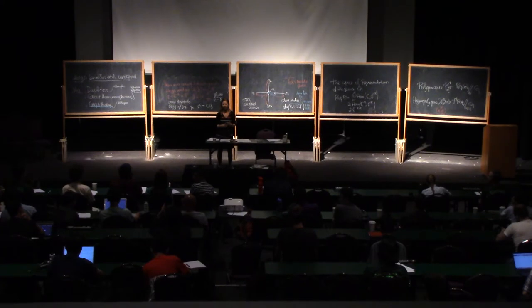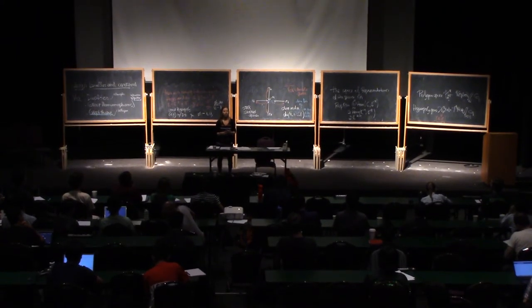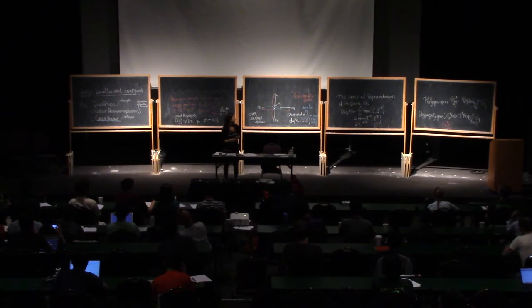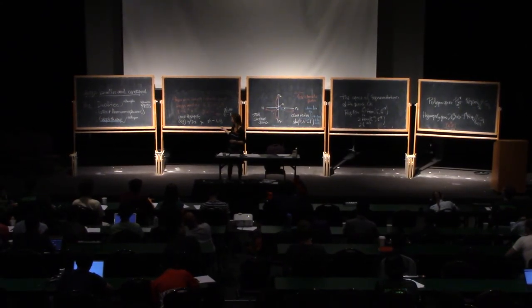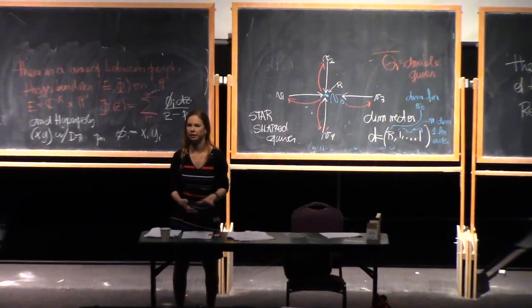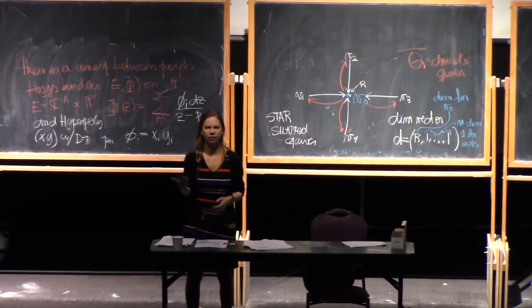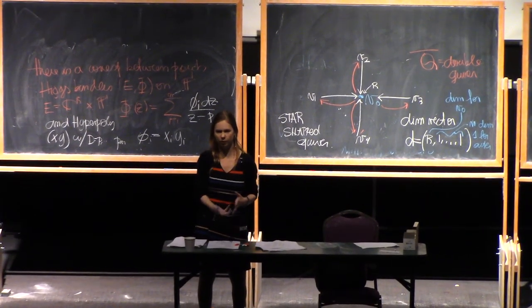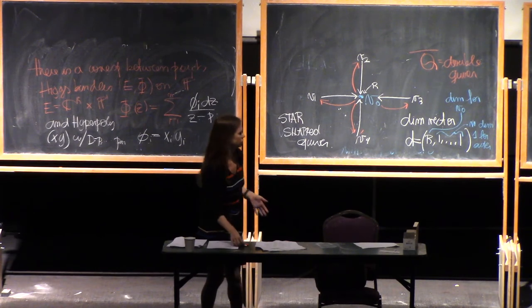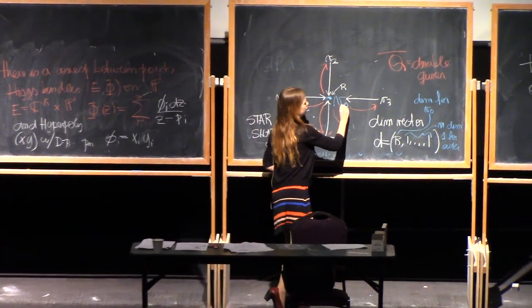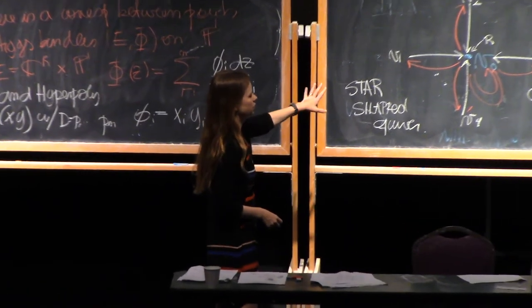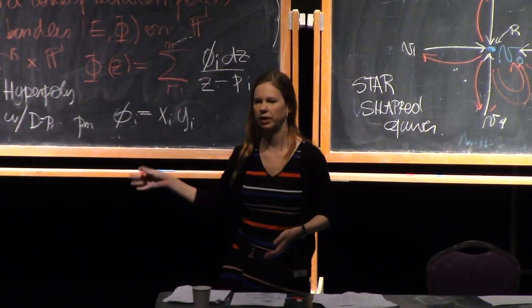In response to a question about other moduli spaces of Higgs bundles: you always need to consider some parabolic weight because you are marking points on your Riemann surface and need to encode that information. If you have Higgs bundles that can encode marked point information without parabolic structure, that could work. You can also do wild Higgs bundles, and for higher genus you can add loops to the quiver, though that means you can't use all the nice properties of Nakajima quiver varieties.